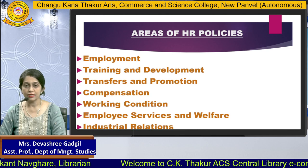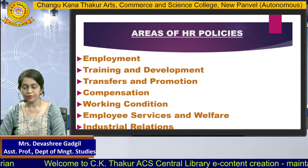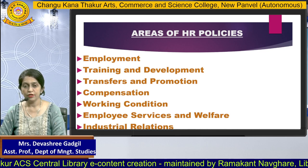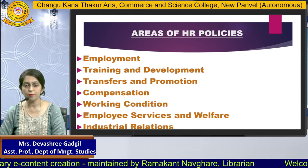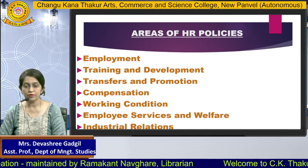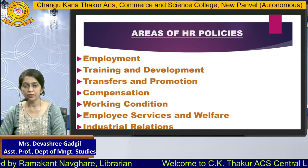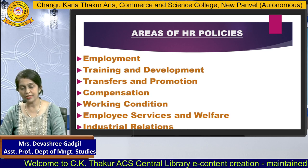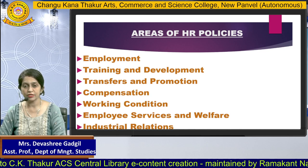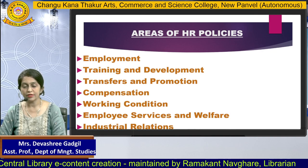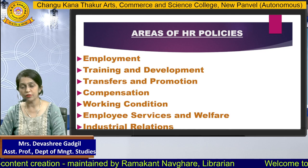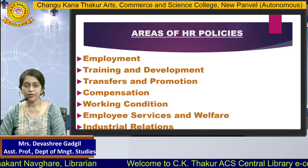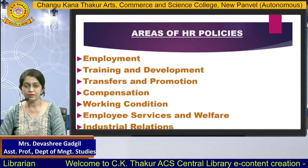Let us understand the areas of HR policies. Number one is employment — giving employment to those looking for jobs. The organization must first decide the rules and regulations for granting employment. Second is training and development — improving the skills and knowledge of people, which motivates employees. Overall development of human resources is possible through training programs that boost and improve the knowledge and skills of employees. Another important area is transfer and promotion.